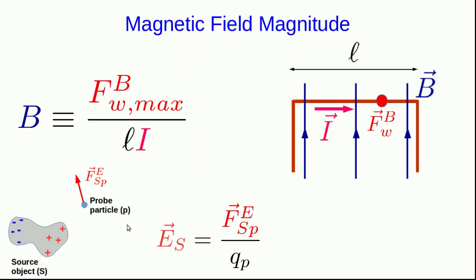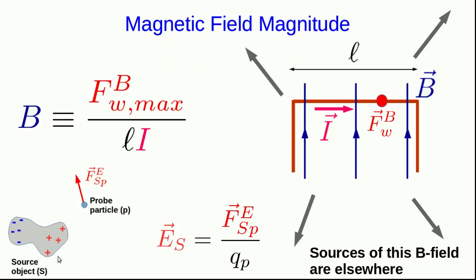Notice how similar this is to our definition of electric field, where we took an electric force on a probe particle, and divided by the charge on the probe particle. In this picture, I showed a source object. In this picture, I'm relying on your increasing understanding of the field idea to say that you know that the B field here is due to some sources that are elsewhere that we're not concerned about, and that this B field has nothing to do with the wire that we're using to measure it.